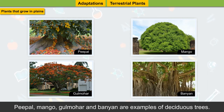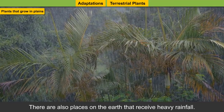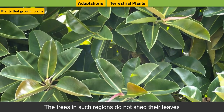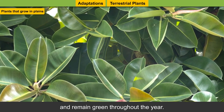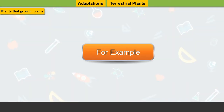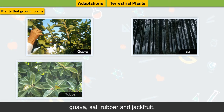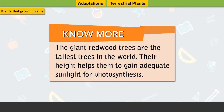Mango, Gulmohar, and Banyan are examples of deciduous trees. There are also places on earth that receive heavy rainfall. The trees in such regions do not shed their leaves and remain green throughout the year — they are known as evergreen trees. Examples include guava, sal, rubber, and jackfruit. The giant redwood trees are the tallest trees in the world, and their height helps them gain adequate sunlight for photosynthesis.